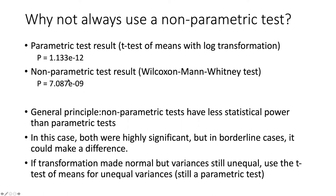The nonparametric test basically solved the problem if we had any qualms with using parametric tests. But if nonparametric tests are so great, why don't we just use them all the time and skip parametric tests? Well, if we compare the results of the same data using the parametric test and the nonparametric test, we can see that although the nonparametric test was highly significant with a p-value of 10 to the minus 9, the t-test was even more significant at 10 to the minus 12. This pattern is not a coincidence — as a general principle, nonparametric tests always have less statistical power than the equivalent parametric test.